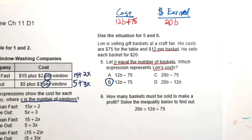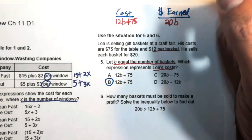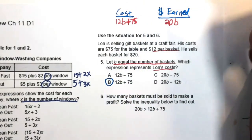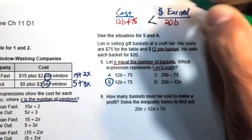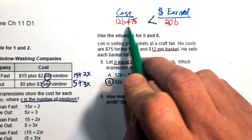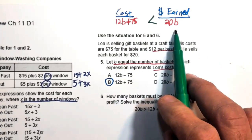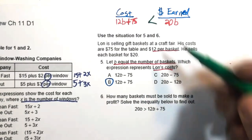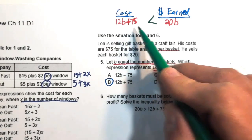Number six asks how many baskets must be sold to make a profit. As a business owner, you want the amount earned to be larger than the cost. The inequality shows 20b — the amount earned — must be greater than 12b plus 75, which is Lon's cost.